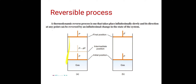Consider this diagram to explain what a reversible process is. This is a cylinder fitted with a weightless and frictionless piston. The pressure outside this piston is P, and inside the pressure is also P. At this position the pressure is balanced — the pressure inside and outside the piston is the same.